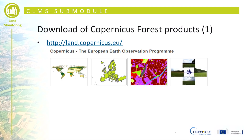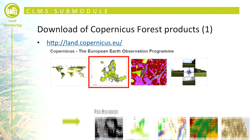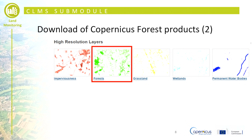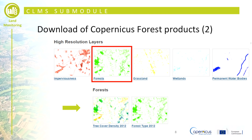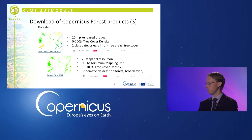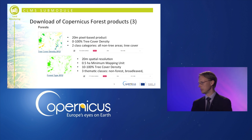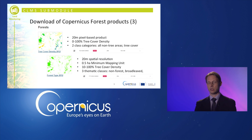To download the high resolution forest layer products, you access the Copernicus land monitoring portal, select the continental component, then select the high resolution layers. Next, select the forest layer — one of five layers including imperviousness, forest, grassland, wetlands, and permanent water bodies. Download both the tree cover density and forest type products. The tree cover density is a 20 meter spatial resolution product providing tree cover density per pixel in a range of 0 to 100 percent, derived by sophisticated algorithms.